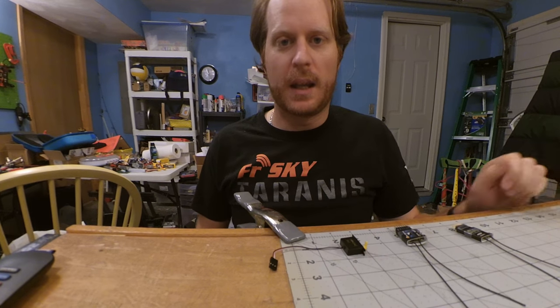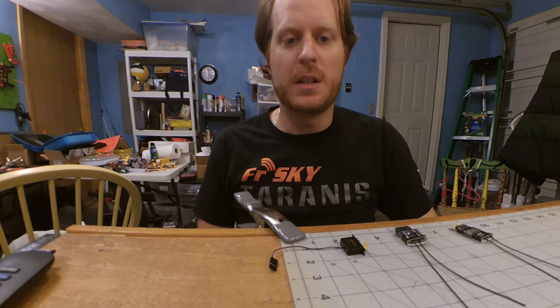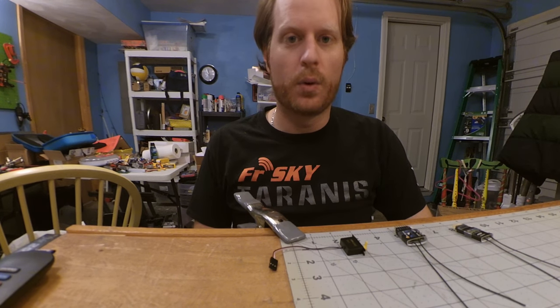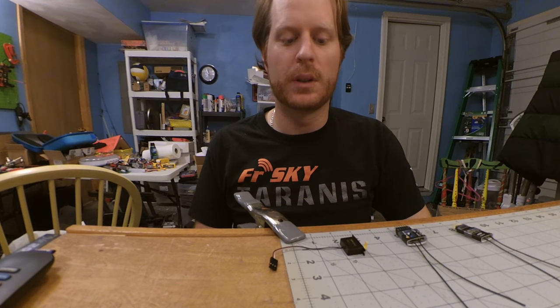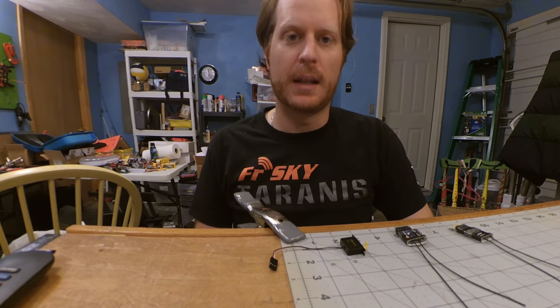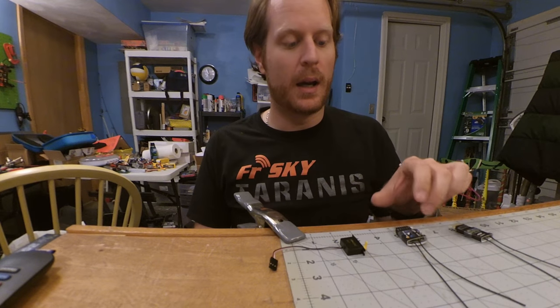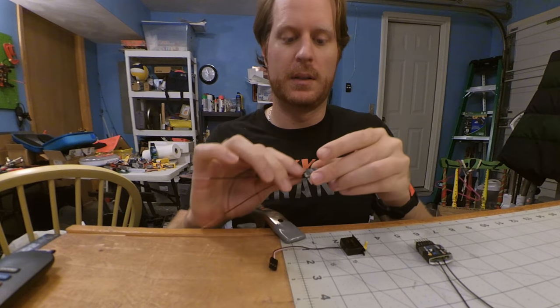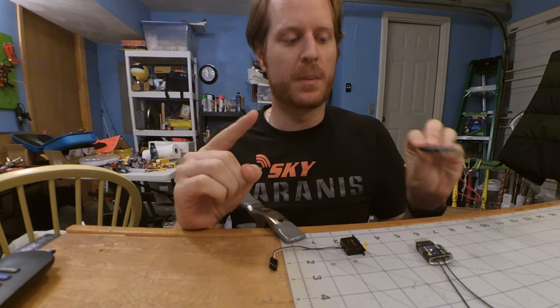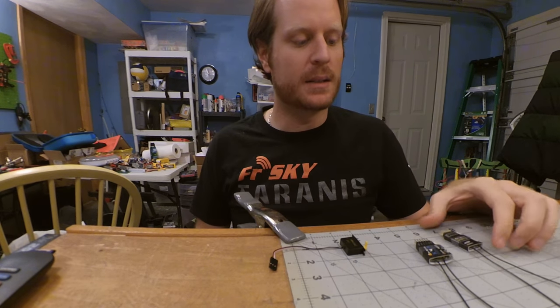I'm going to be building an EPI DLG soon, and in order to figure out what receiver I wanted to use, I wanted to do a little testing with the servos and see how low of a voltage either the FrSky X4R or the D4R2 could go. On the packaging, the D4R2 is rated down to 3.5 volts, whereas the X4R is rated down to 4 volts.